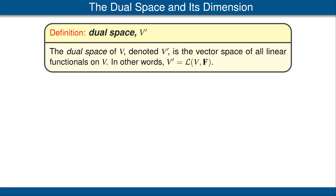We gave the vector space of operators from V to V the special notation L(V). Similarly, the vector space of linear functionals is so important that we give it a special name and notation. The dual space of V, denoted by V′, is the vector space of all linear functionals on V. In other words, V′ equals L(V, F).